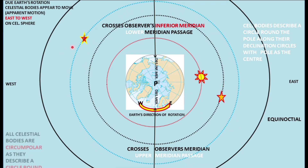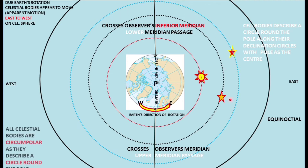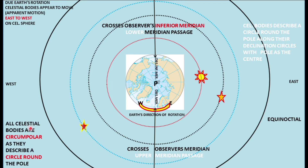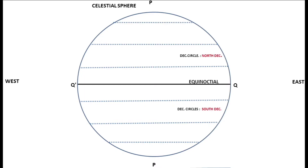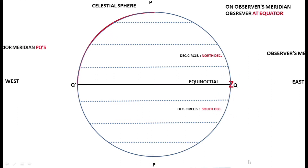All the celestial bodies would be going around the pole, so all bodies are circumpolar in that sense because they are moving right around the pole. But in navigation, what we refer to as circumpolar bodies is something different, which we will come to next. This is your celestial sphere — I have drawn the equinoctial here. Now let's consider that there is an observer who is on the equator.